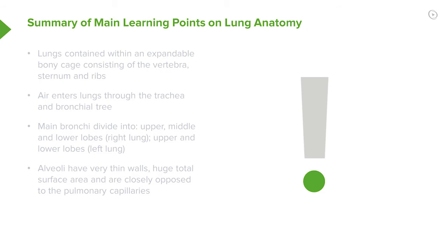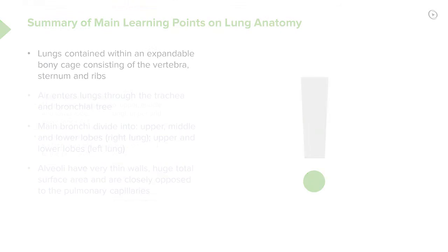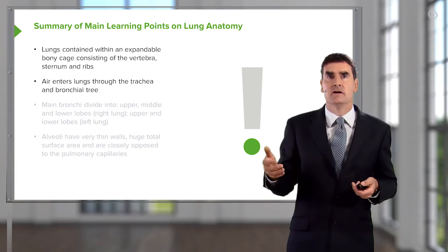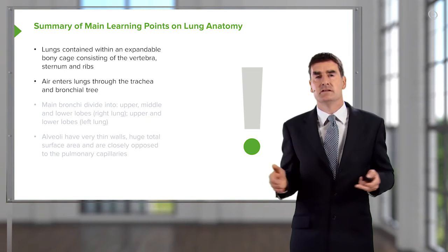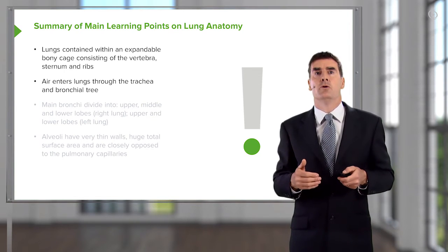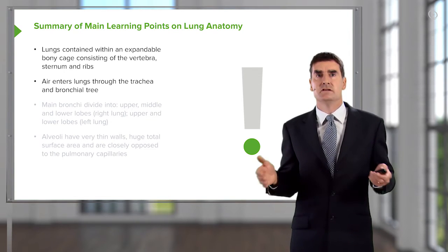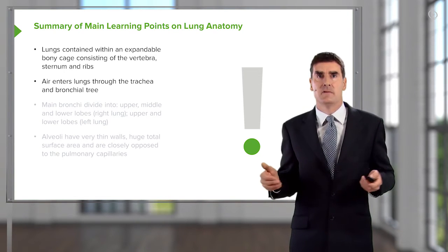To summarize the main learning points for this lecture on lung anatomy: the lungs are contained in an expandable bony cage comprising the vertebrae, the sternum, and the ribs. Air enters the lungs through the trachea and is conducted down through the bronchial tree to reach the alveoli.